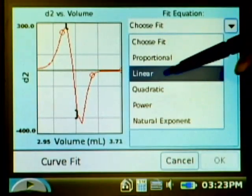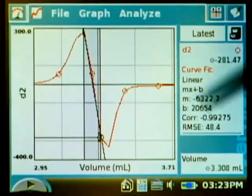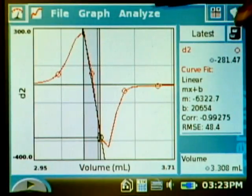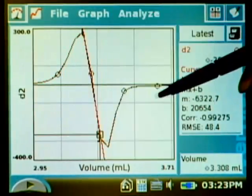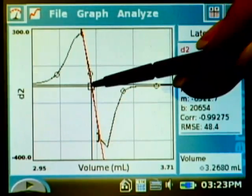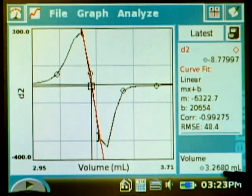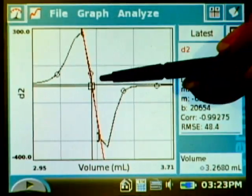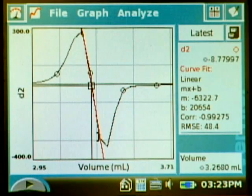So my fit is linear. All right, now that I have a linear fit, I can turn on interpolate and get very close to zero right there. Where I'm as close to zero as I can, my volume is 3.2680. So that gives us the exact equivalence point using the second derivative, which is probably the most accurate way to do that.